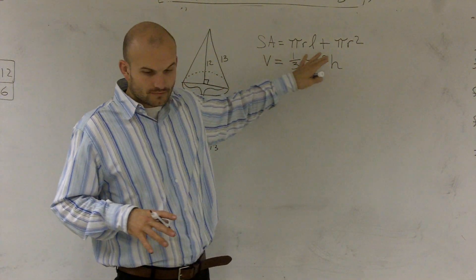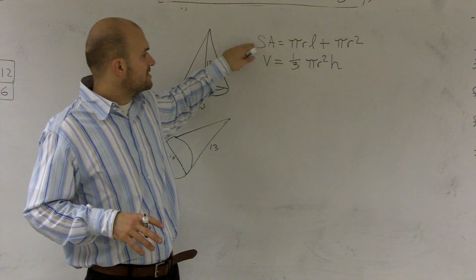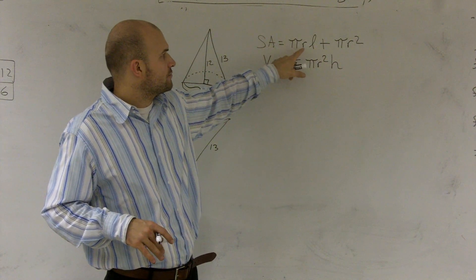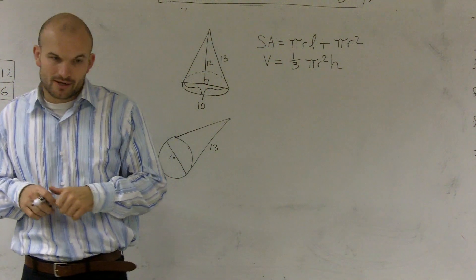The two formulas you're going to need: total surface area (SA) is pi times radius times length plus pi times radius squared.